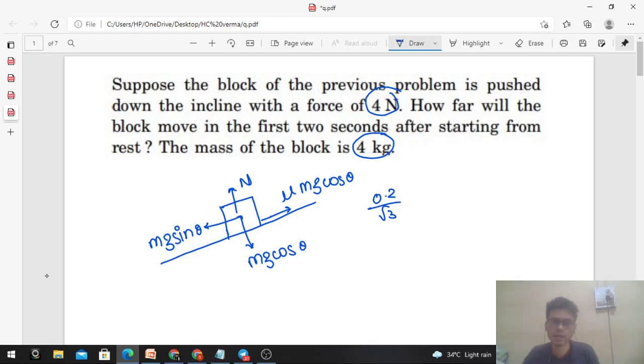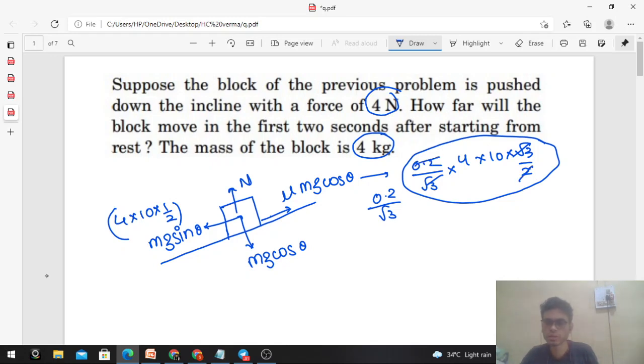Now in addition, a force of 4 newton is also acting. Let's find out these values. mg sin theta will be m is 4 into g is 10 into sin theta is 1 by 2, so that's 20N. mu mg cos theta will be mu is 0.2 by root 3, m is 4 into g is 10 into cos theta is root 3 by 2. Root 3 cancels with 2, so 0.1 times 10 gives 4N backward, and 20N forward.